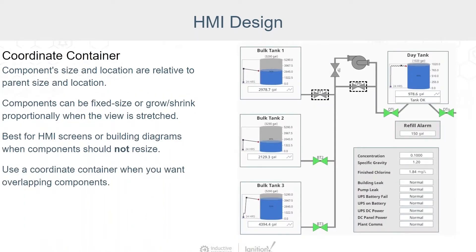Next is the coordinate container. Coordinate containers are best for HMI screens or building diagrams when you don't want components to resize and shift positions. You can also use a coordinate container when you want components to overlap. For example, you may want labels on top of a motor display, or a spark line centered inside a tank. Component size and location are relative to the parent container size and location. The components can be fixed sized, or optionally they can grow and shrink when the view is stretched.